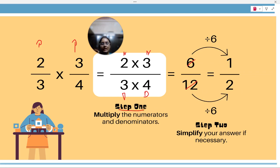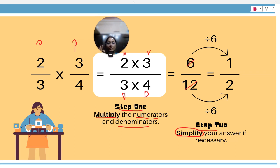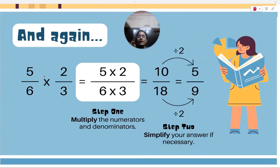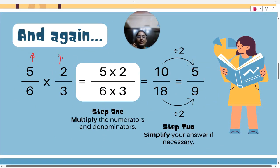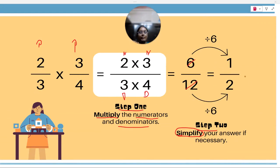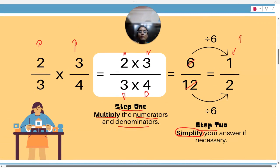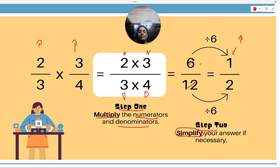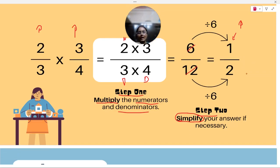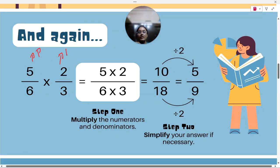So step one is: multiply the numerators and denominators. Step two is: simplify your answer — put it in standard form, where the numerator and denominator have no common factors. Now let's do another example: 5 by 6 multiplied by 2 by 3. Both of these are proper fractions.